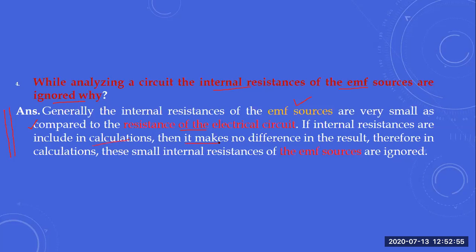Since the internal resistances are very small compared to the circuit resistance, if they are included in calculations they make no significant difference in the result. Therefore, to make calculations simpler and easier, these small internal resistances of the EMF source are ignored. The reason is simple: they have a very small effect on the calculation of the result.